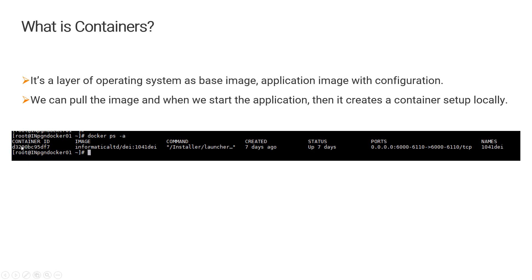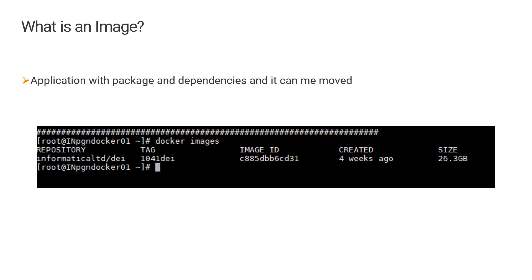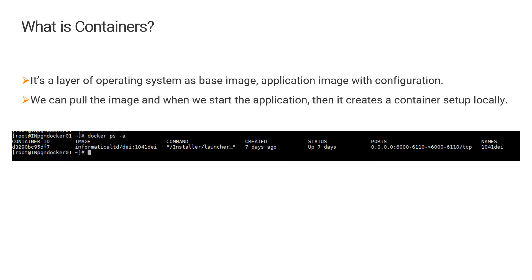This is called the container. The container ID is D3290BC9FDF7. This container is running on the image 10.4.1 DEI. Until you start the container image, the container will not be created locally. You will initially pull the image, then start the image, and that will create a container locally. This is the difference between the image and the container.